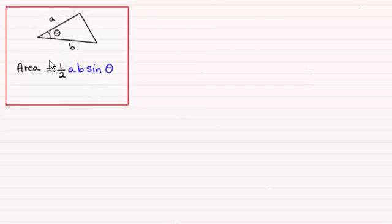Now you should be familiar with the area of a triangle. If we've got two sides of lengths a and b and the included angle is theta, then the area is equal to half ab sine theta.